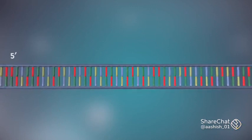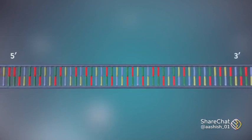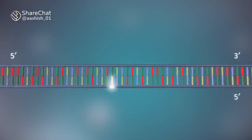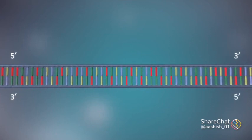Each strand has a 5' end and a 3' end. The two strands run in opposite directions. This determines how each strand of DNA is replicated.